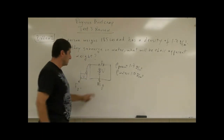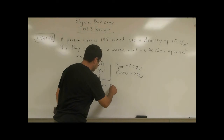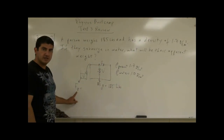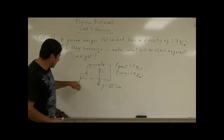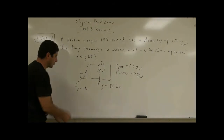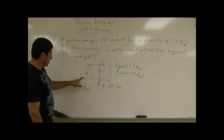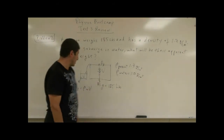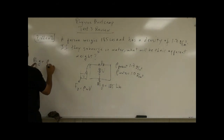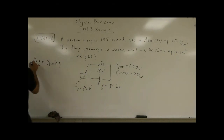His own weight is mg, which we already know equals 185 pounds. The buoyant force Fb equals the density of the water times the volume of displaced water times g. We also know that mg equals the density of the person times the volume of the person times g, which equals 185.